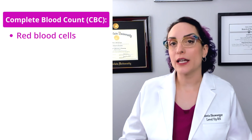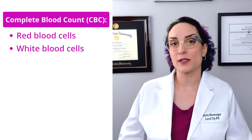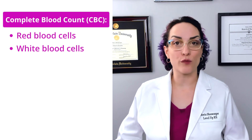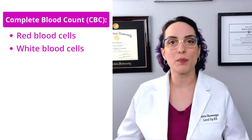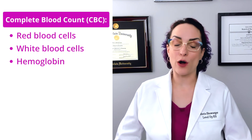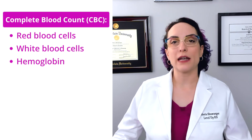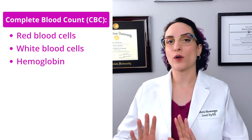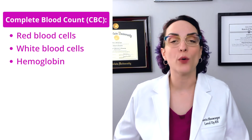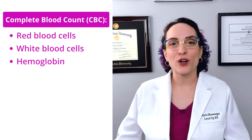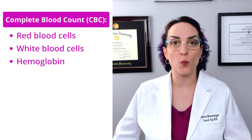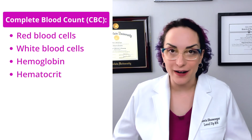A CBC is also going to give us a little bit of white blood cell information, such as what is the total white blood count. That can help us identify if we are experiencing an infection, but it doesn't give us any more information than that. It can also give us information about the hemoglobin, which is a component of the red blood cell. We do separate that out because hemoglobin is an important lab value for bleeding, for hemorrhage, or any concern that your patient might be bleeding. We're also going to need to know their hematocrit.